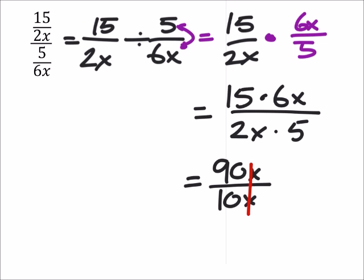The x's will cancel out, so I just need to look at the 90 and the 10. If I divide both of these by 10, I get 9 over 1, which is the same as 9.